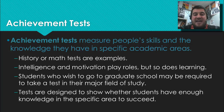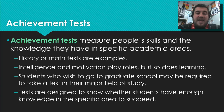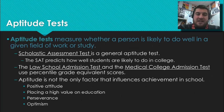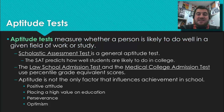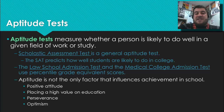Learning, intelligence, and motivation all play roles in scores on achievement tests. Students wishing to go to graduate school may be required to take a test in their major field of study. Aptitude tests measure whether a person is likely to do well in a given field of work or study. The Scholastic Assessment Test is a general aptitude test, though the SAT has been under controversy — it's been called both the Scholastic Achievement Test and the Scholastic Aptitude Test.